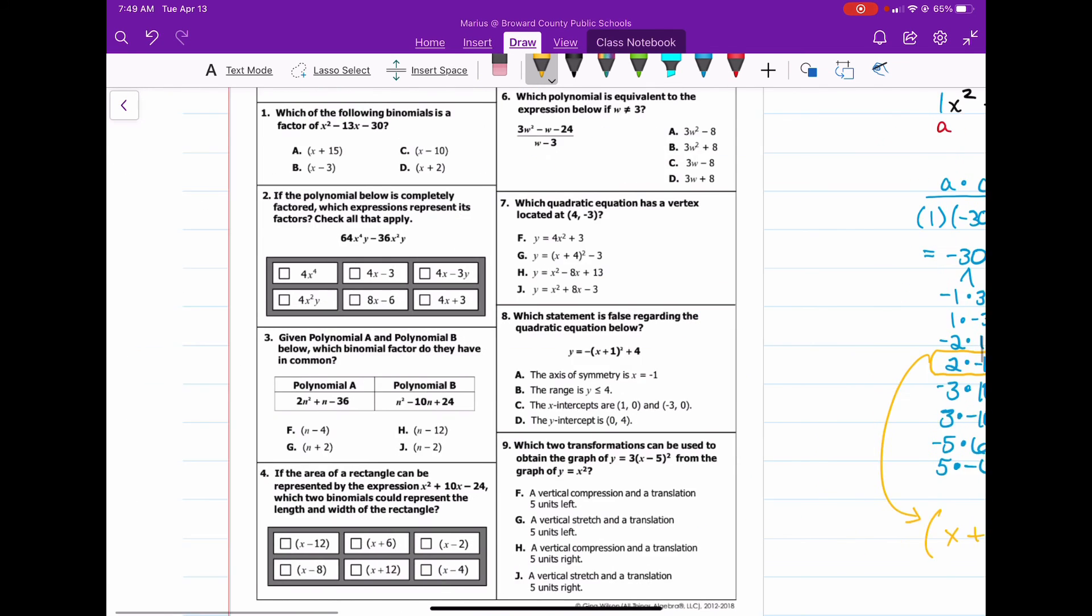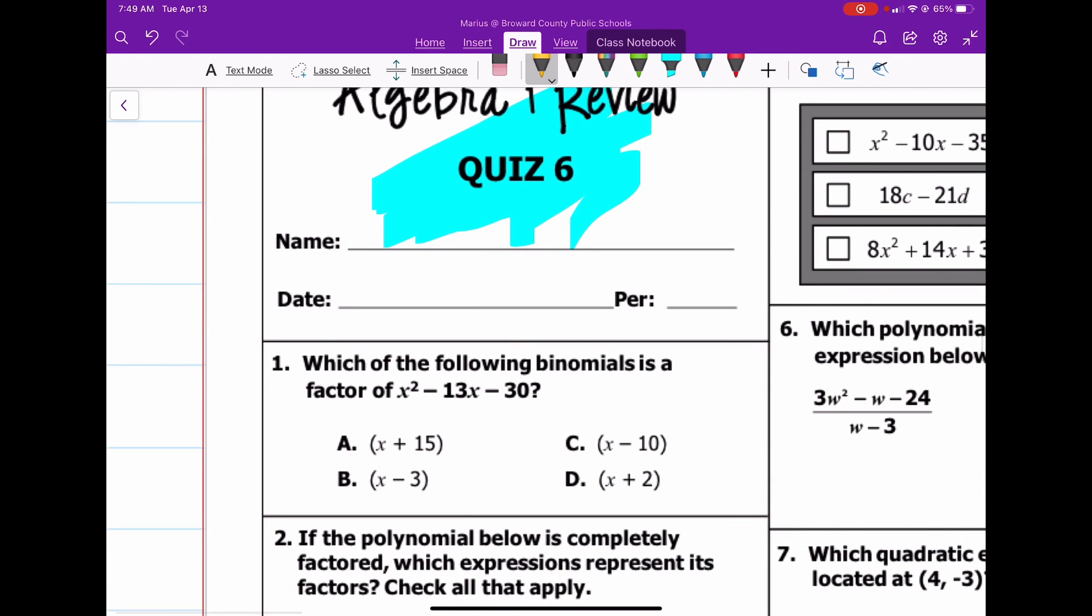So, now, let's go back to our problem. We know we had x plus 2, x minus 15. So, if we look at these, which of the following binomials is a factor? Well, no, not A. A is a distraction. No, not B, not C, but D. Alright, see you guys later.